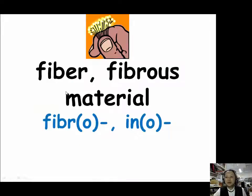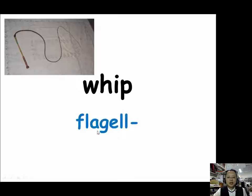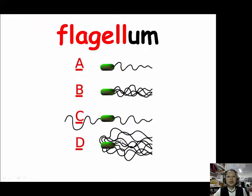Let's review what we just learned. For describing fibrous things we use FIBRO (F-I-B-R-O) and INO (I-N-O). When we describe things shaped like a whip, we use the prefix FLAGELL (F-L-A-G-E-L-L). Our example is flagellum.